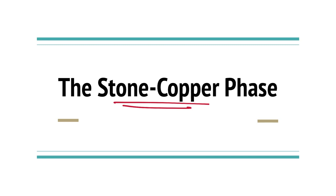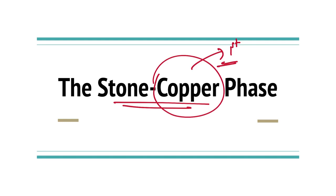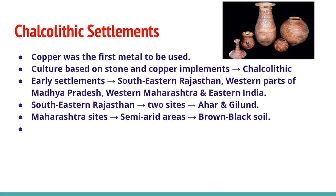By the end of the Neolithic period, man started using metals and copper was the first metal to be used. There were several cultures based upon the use of stone and copper implements, and that culture is called the Chalcolithic culture. The earliest settlements belonging to this phase are found in south-eastern Rajasthan, western parts of Madhya Pradesh, western Maharashtra, and eastern India.